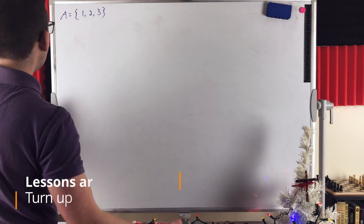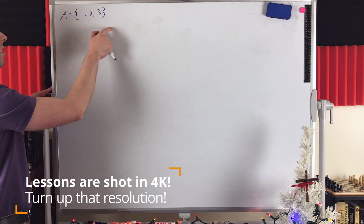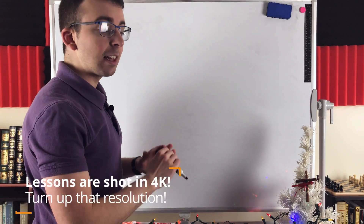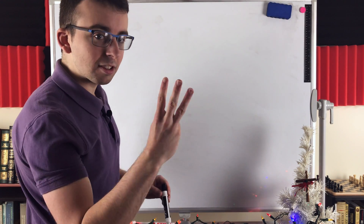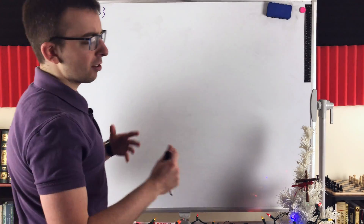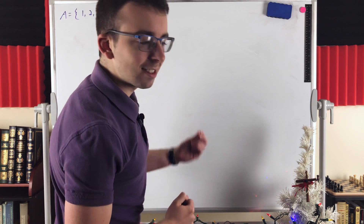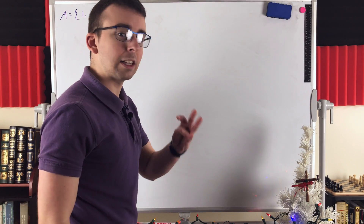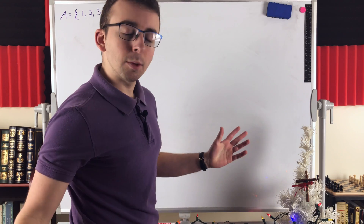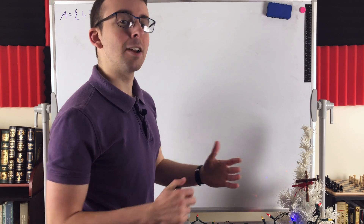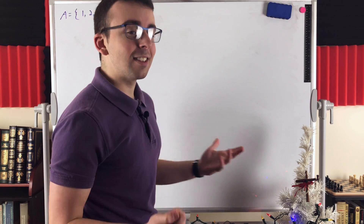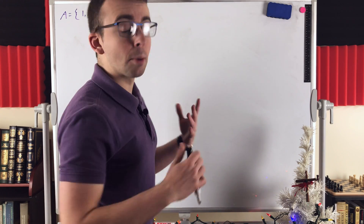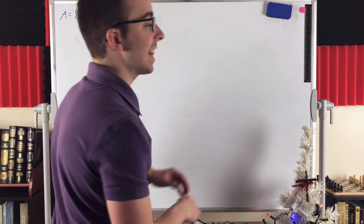So let's see how this works. We're going to start with an example with this set A that has three elements. Then we're going to do another example with another set with three elements, but it's just going to be a little bit of a nastier set. You can, of course, continue this procedure with sets of four elements, five elements, however many elements you please, as long as it's a finite amount. But of course it does take some time — it's not necessarily super efficient, but it is reliable, and that's important.